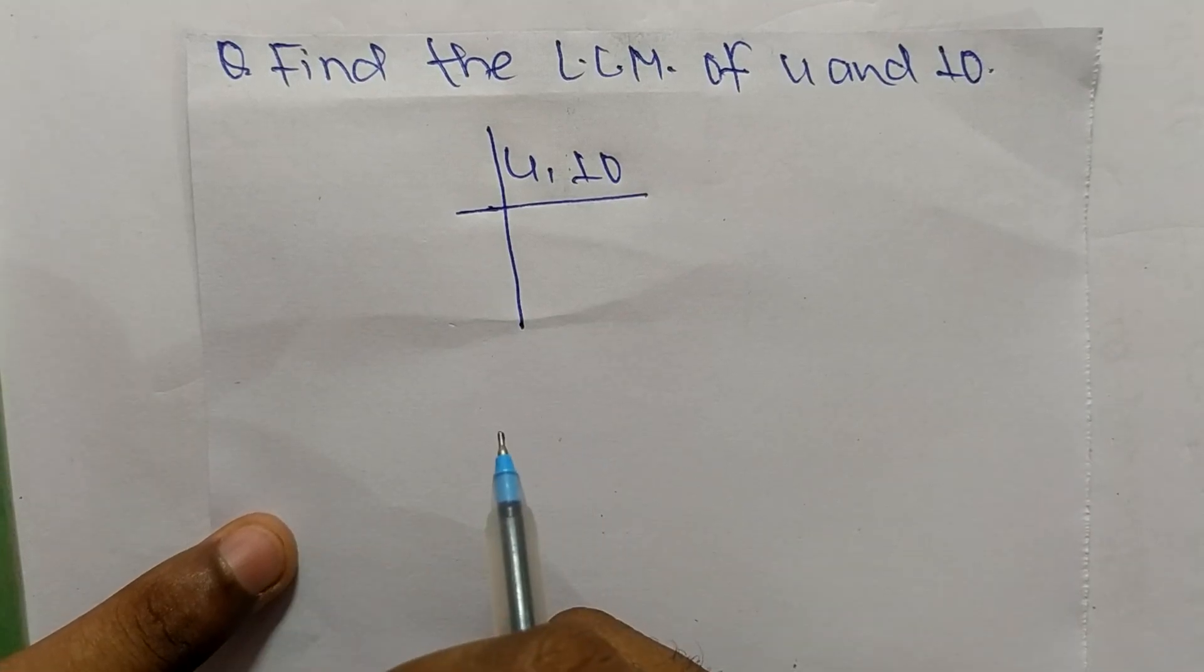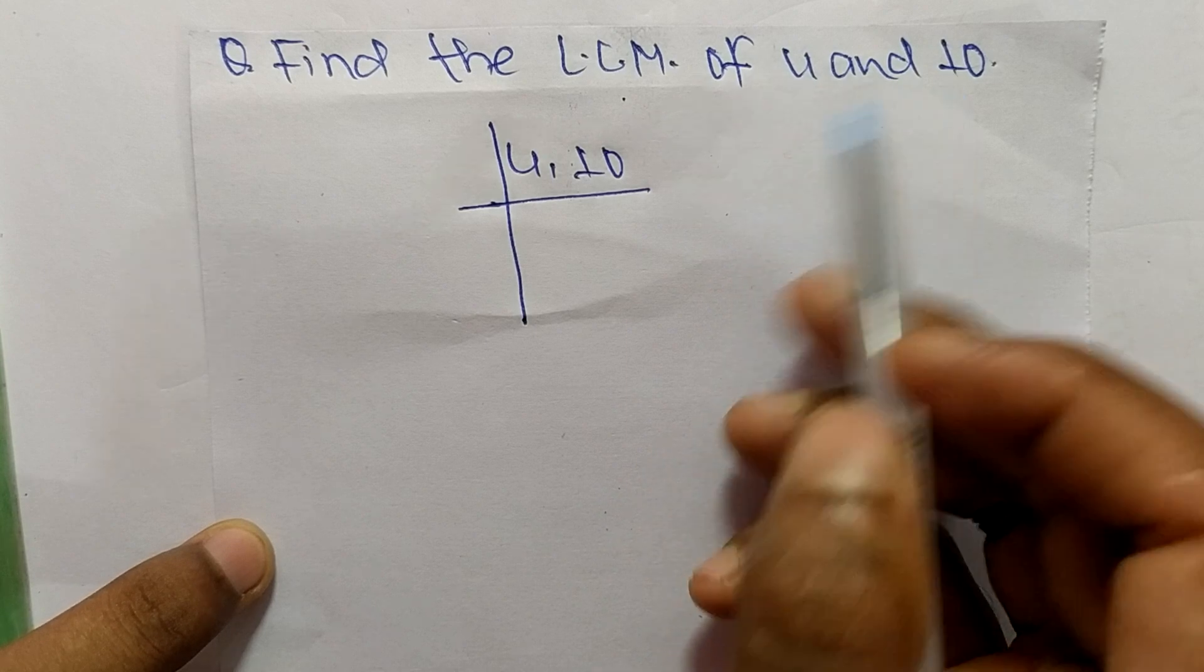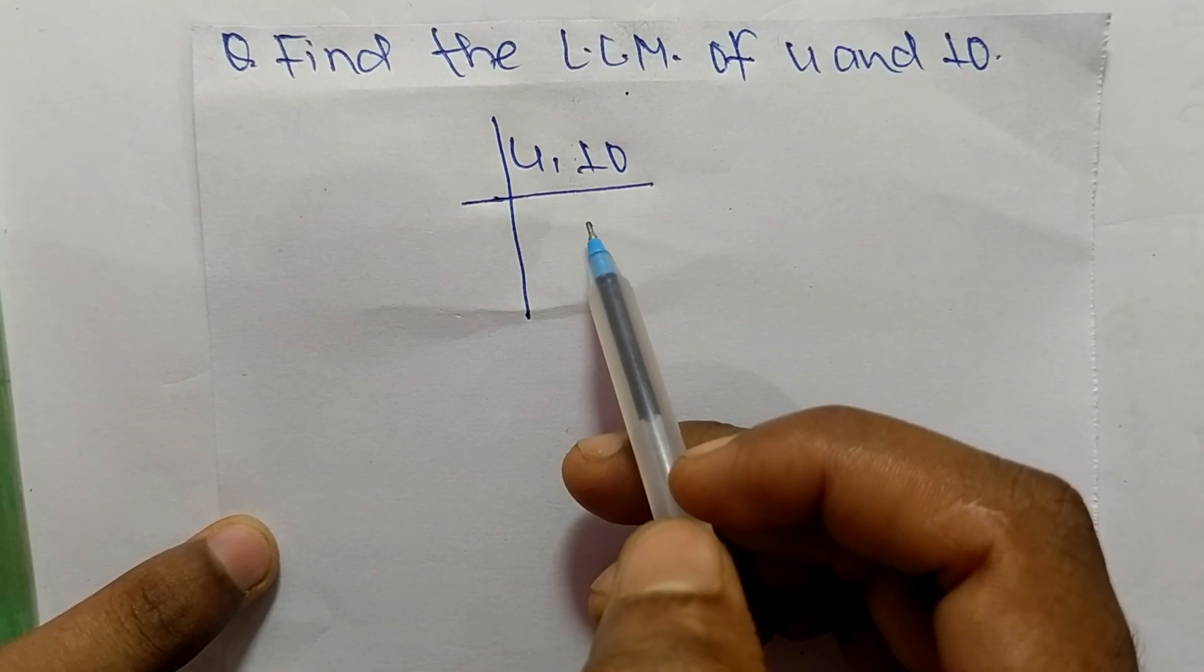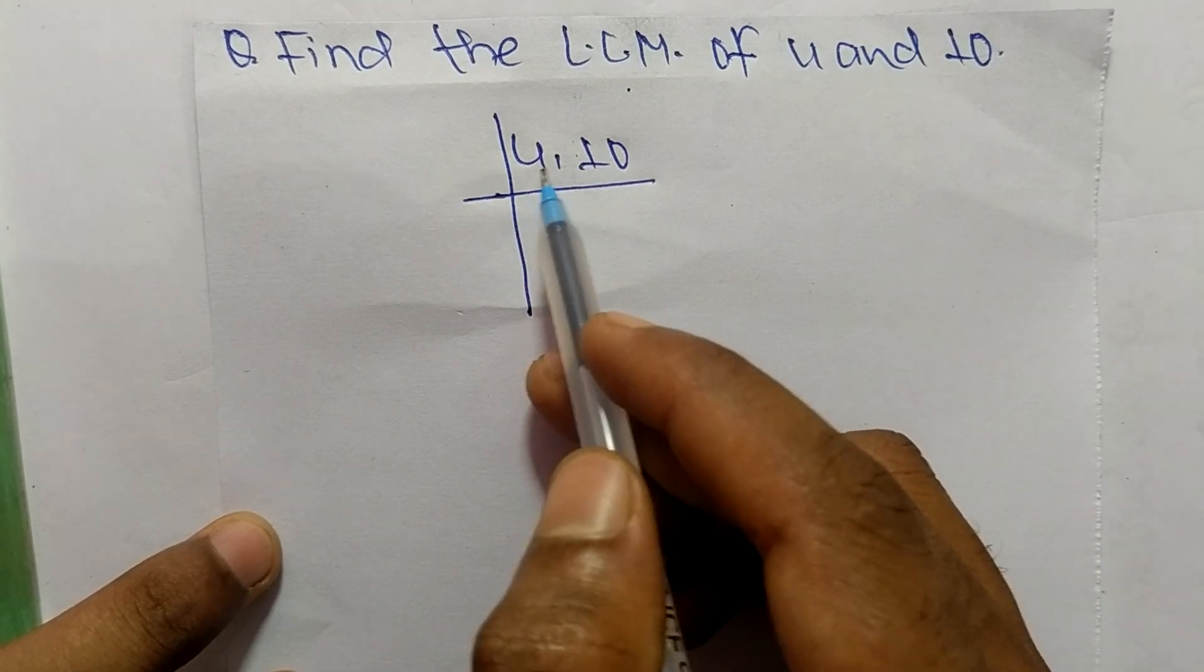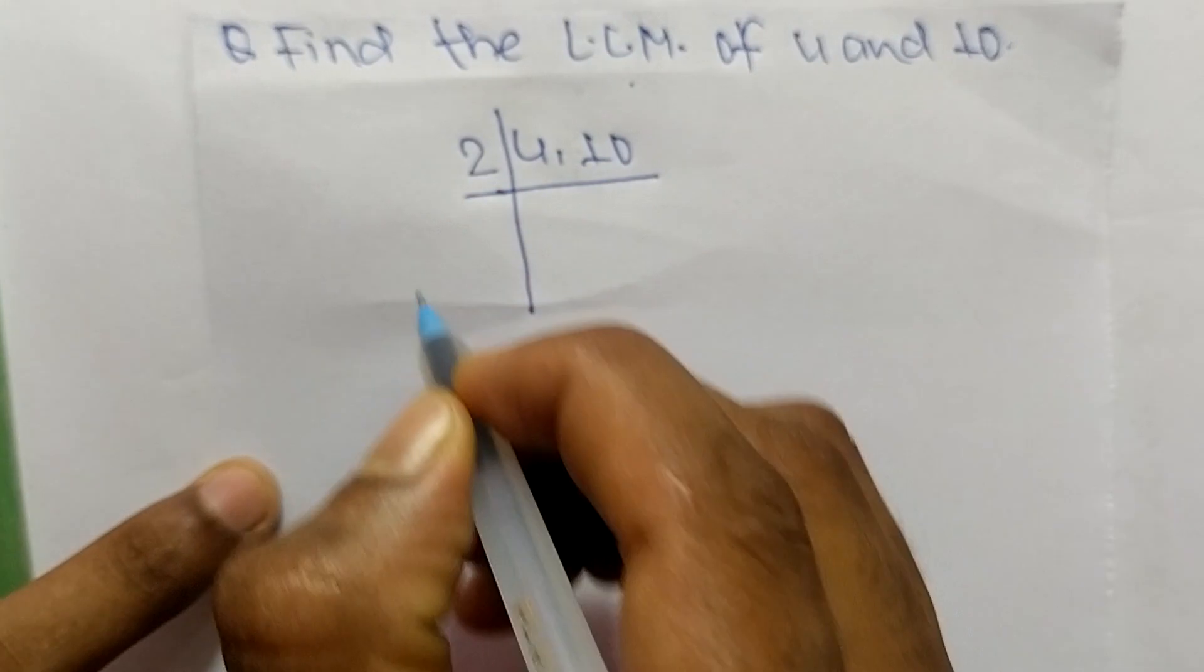Today in this video we shall learn to find the LCM of 4 and 10. For that, we have to choose the lowest number which can exactly divide both numbers. The lowest number is 2, so 2 times 2 means 4, and 2 times 5 means 10.